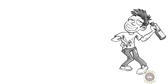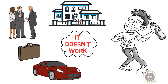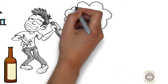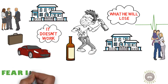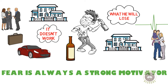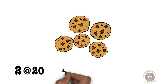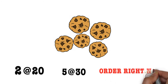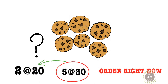How do we use this in regular life? If you have a friend with a serious drinking problem and telling him about a better life — a good car, a nice house — doesn't work, tell him instead what he will lose if he doesn't quit: his health, his family, his house, his relationships. Fear is always a strong motivator. For example, imagine being offered two cookies for $20, five cookies for $30, and an extra free cookie if you order now — most people would go for the $30 option even if they only need two. This is a familiar marketing strategy.